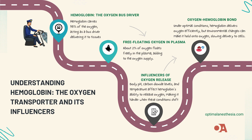Once in the bloodstream, oxygen is carried to tissues in two main ways. The majority, about 98%, is bound to hemoglobin in red blood cells, while a small percentage, around 2%, is dissolved directly in the plasma. Hemoglobin is the heavy lifter here, and its efficiency depends on factors like the body's pH, carbon dioxide levels, and temperature. A shift in any of these can affect how easily oxygen is released from hemoglobin to the tissues.